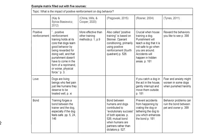Once you pull out all the applicable ideas from the first source, go to the next one and repeat the process. The only difference will be that some ideas that you come across will already have a row, so you can add to the existing row. For new ideas, you'll add a new row.